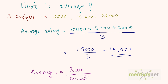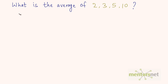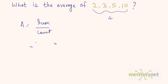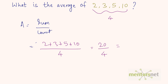For example, what is the average of 2, 3, 5, and 10? The count here is 4 numbers. Using the formula — average = sum / count — we get: (2 + 3 + 5 + 10) / 4 = 20 / 4 = 5. So the average of these numbers is 5.